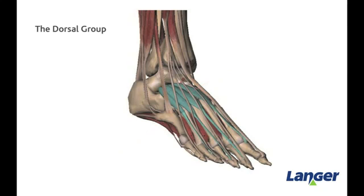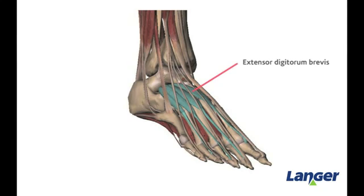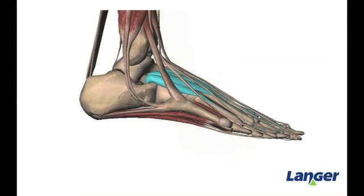The dorsal group consists of only one group of muscles called the extensor digitorum brevis. The extensor digitorum brevis originates both superiorly and laterally on the calcaneus.